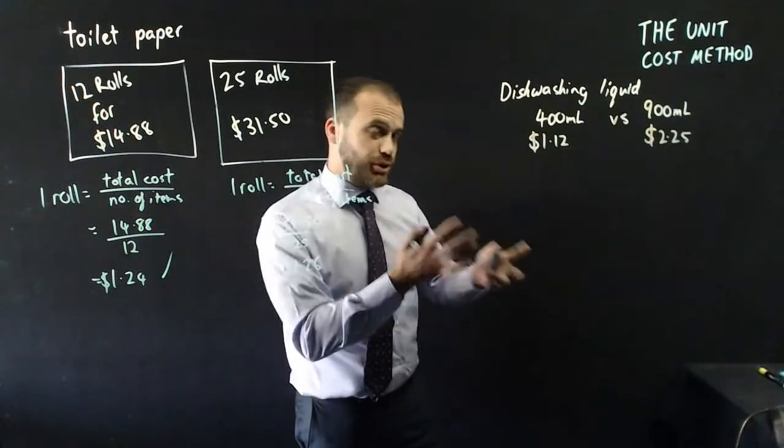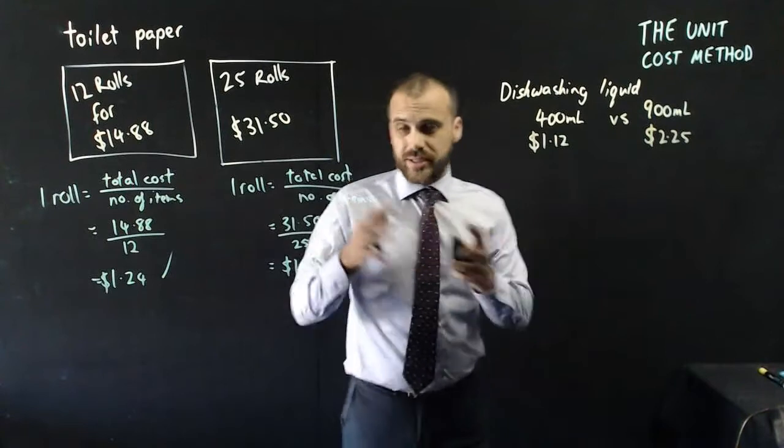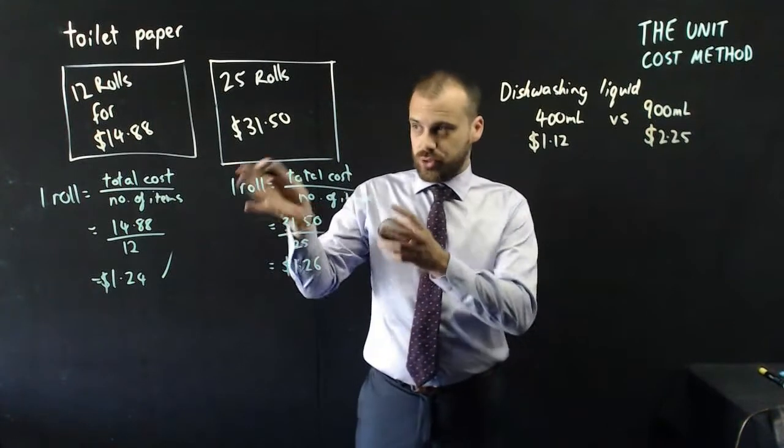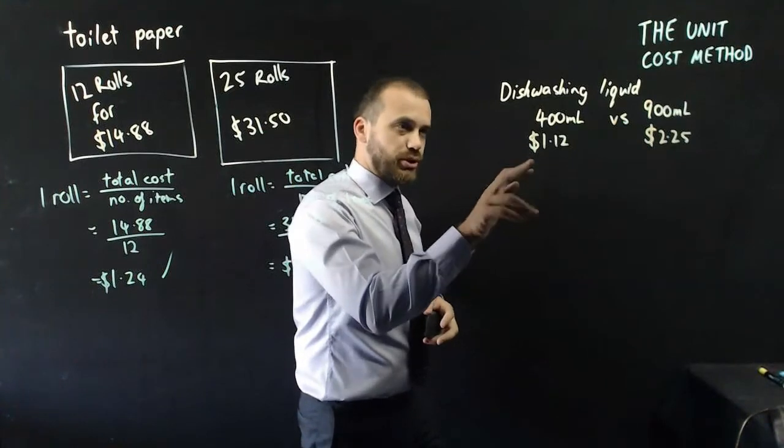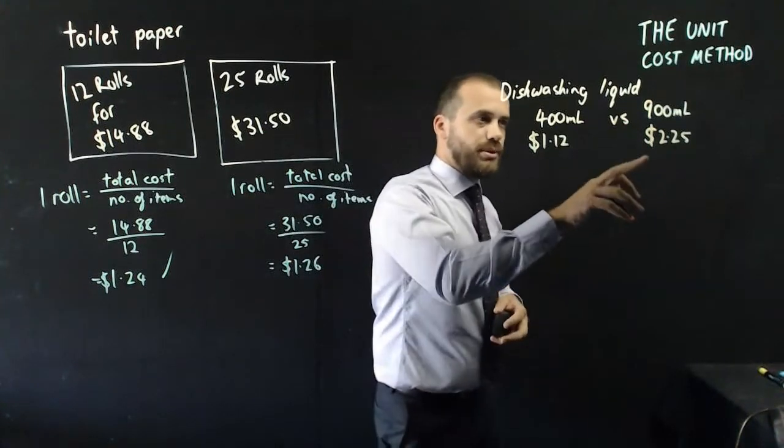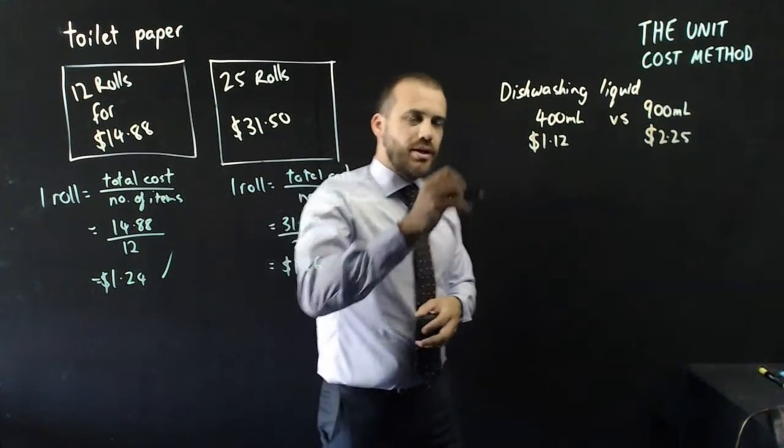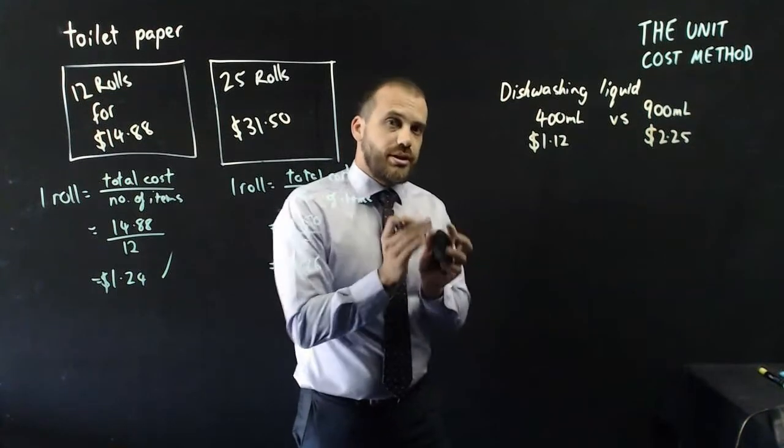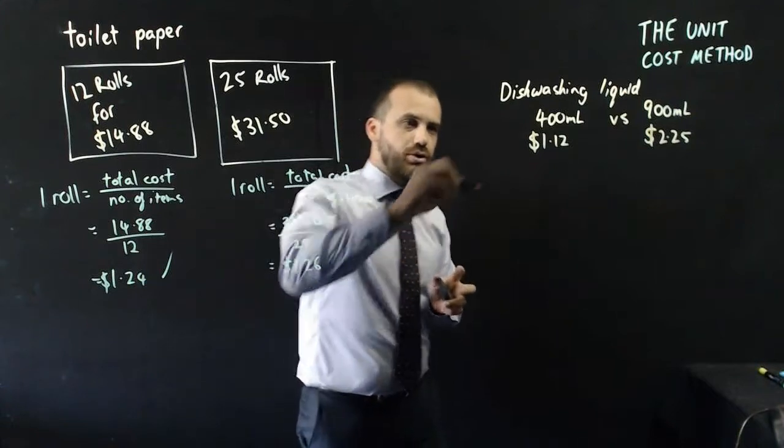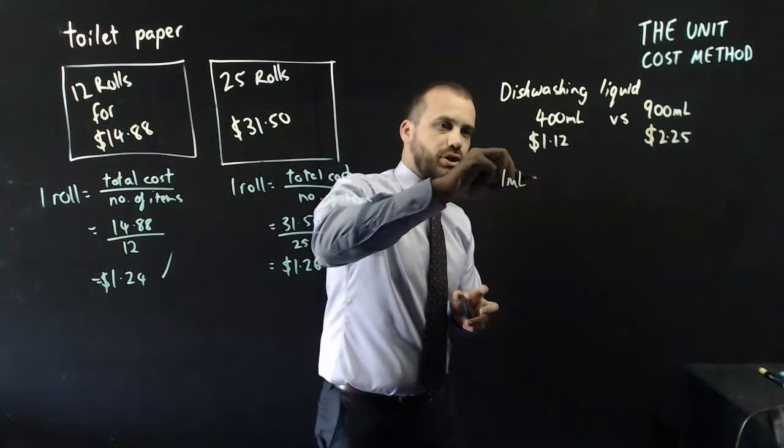So we'll do it with dishwashing liquid as well here, so you can see that it doesn't need to be nice little packets like the toilet paper, one roll, one roll. We can do 400 mils of dishwashing liquid at $1.12, 900 mils at $2.25. We can set this up, we can figure out what one unit is, and we might call one unit one mil of dishwashing liquid.